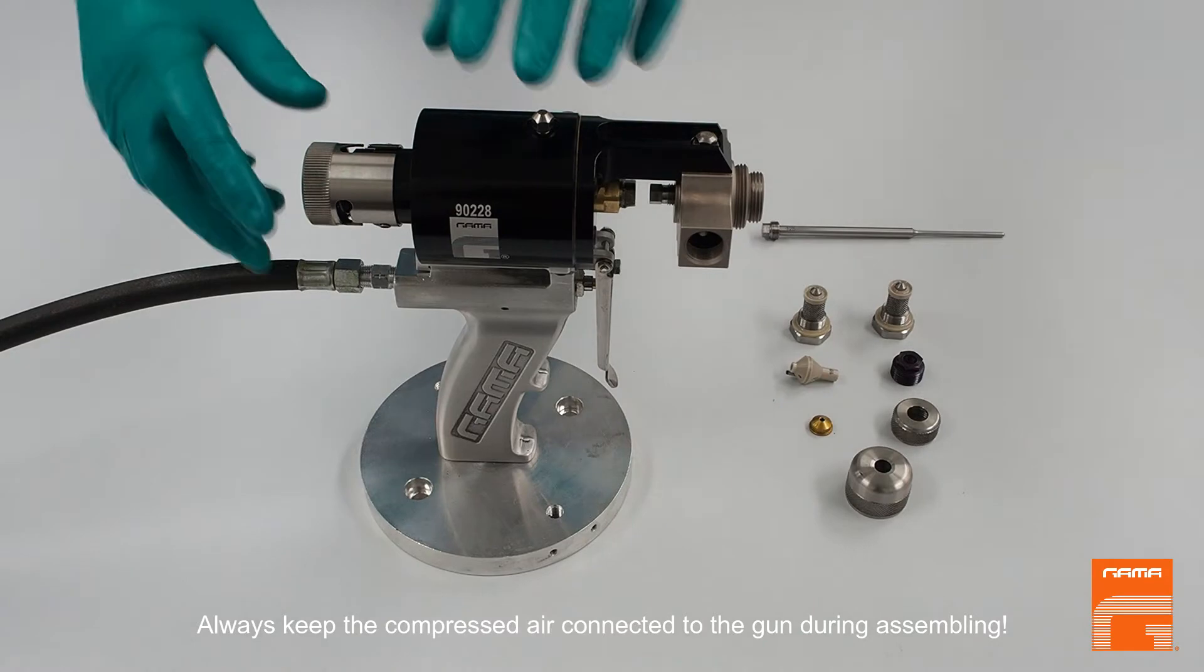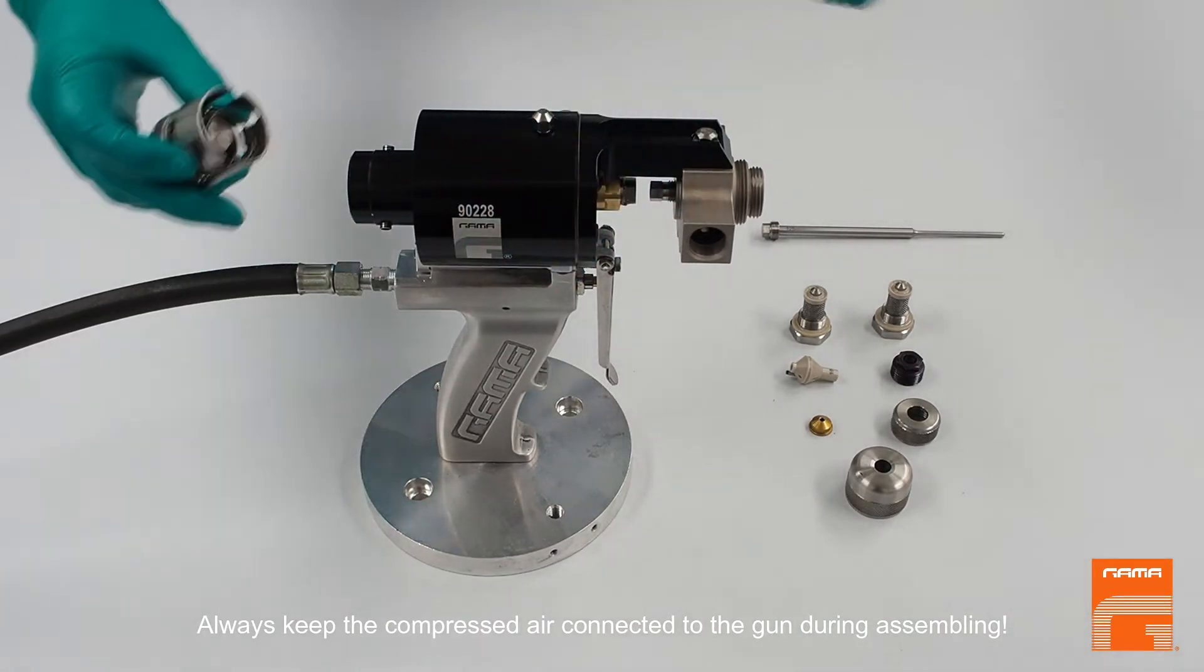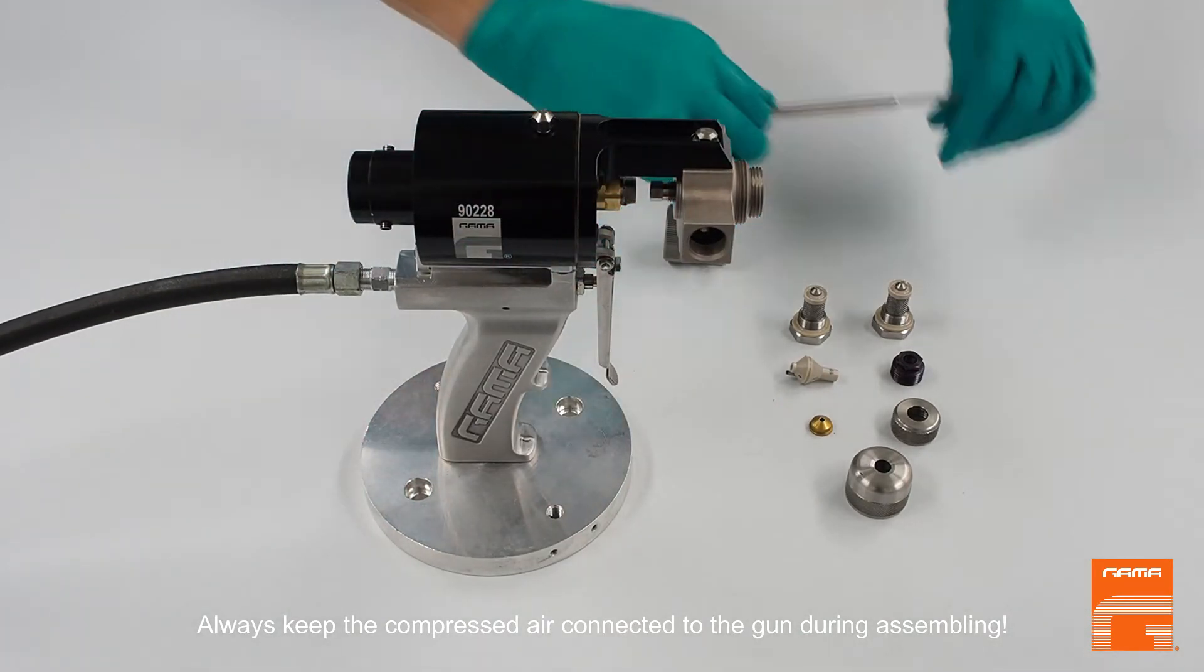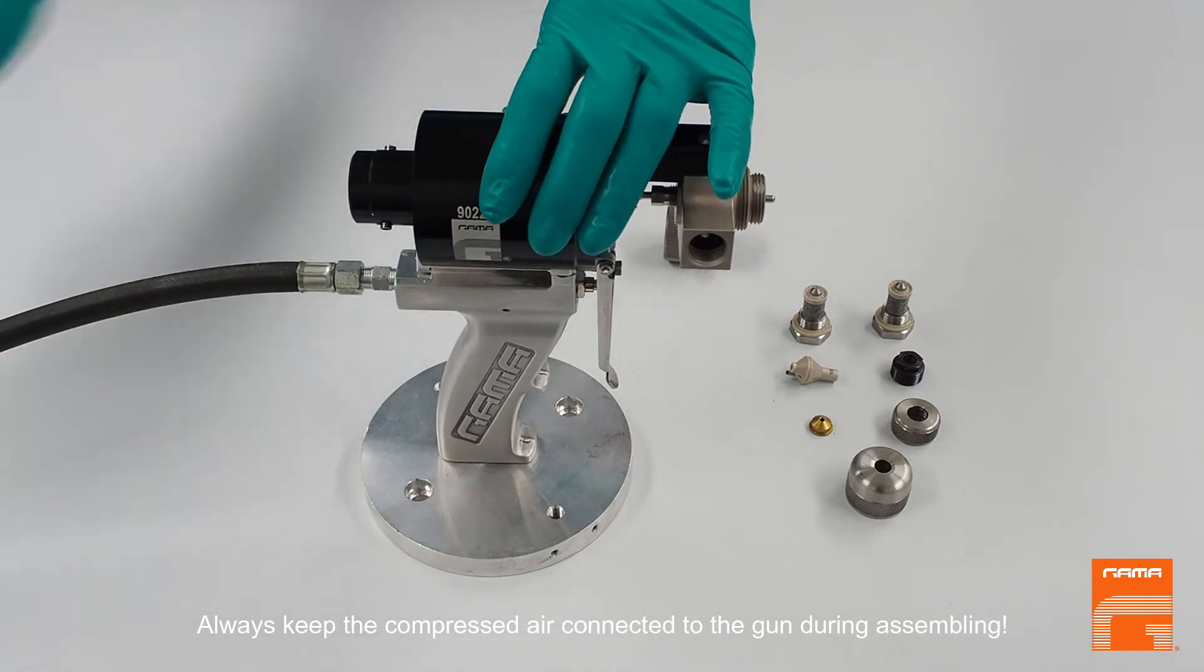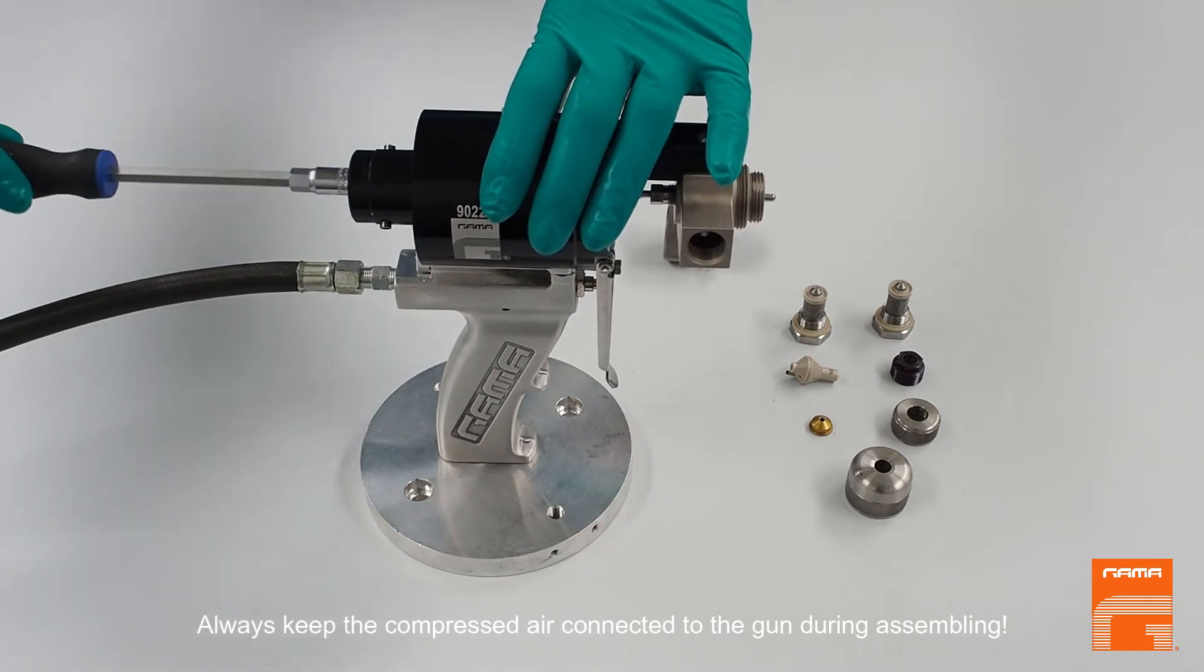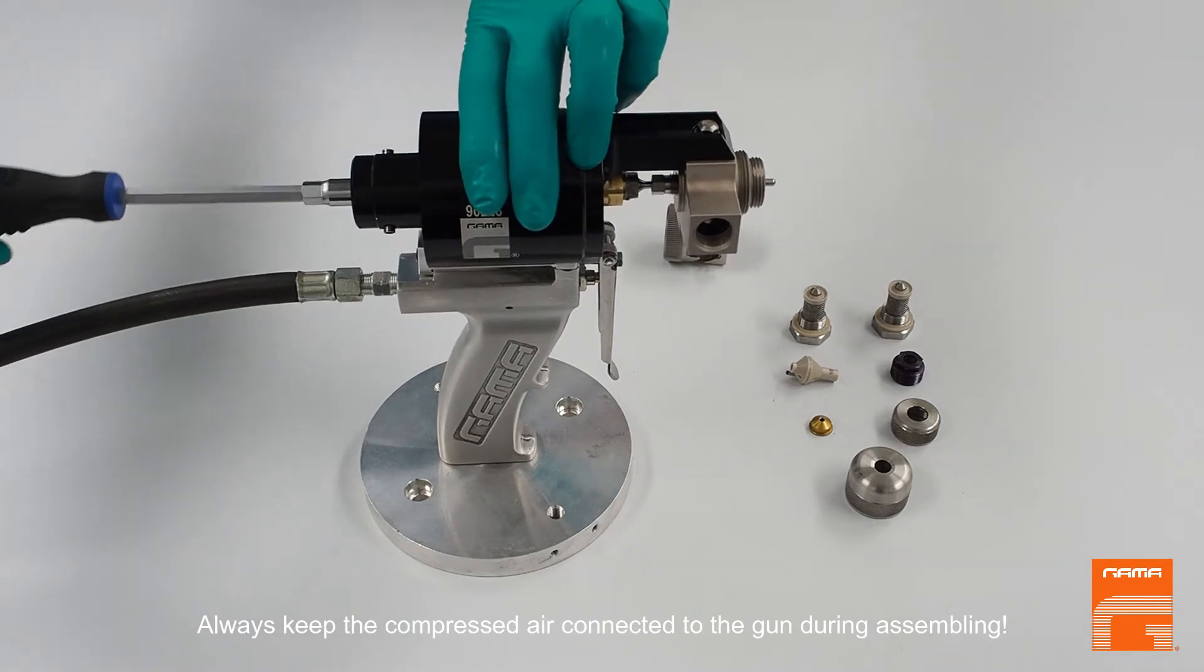Remove the safety block. Insert the needle carefully from the back side of the gun and fix it with the tube tool.